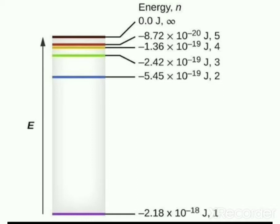If an electron is in the K shell (n = 1), it is very close to the nucleus and has the lowest energy. As n increases, the electron moves farther from the nucleus and its energy becomes higher. The negative sign in En = -Rh × (1/n²) means the energy of the electron in the atom is lower than the energy of a free electron at rest — a free electron being one that is infinitely far from the nucleus, assigned an energy of zero.